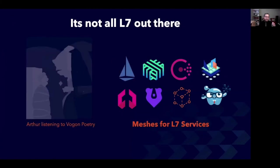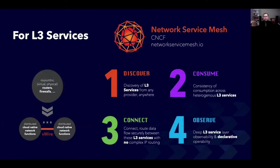Now, just as not everyone in the universe can speak Vogon, not every distributed component is a layer seven service endpoint. So let's explore a few other types. For starters, let's go a little lower down the networking stack. The monolithic virtual or physical router, switch, firewall, or network app is being split apart and distributed into cloud-native network functions. The Network Service Mesh, which is a CNCF project, allows for the discoverability, consistency of consumption, secure data flow connectivity, and deep observability of layer three services across a large distributed system.